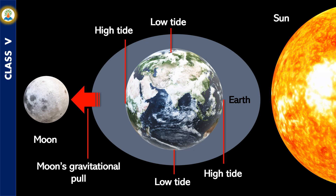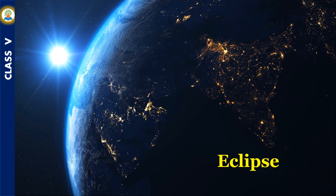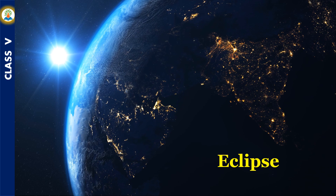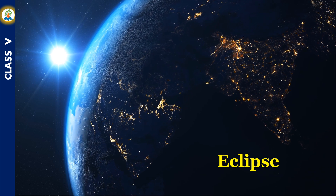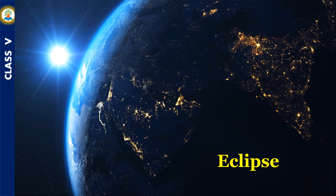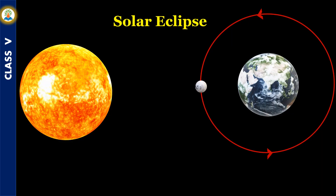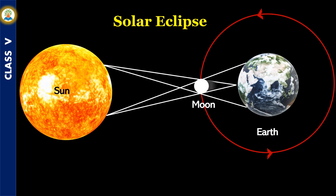The highest tides occur at the time of the New Moon and the Full Moon. An eclipse occurs when an object in space blocks the view of another object such that it cannot be seen partially or completely. A solar eclipse occurs when the Moon comes in between the Sun and the Earth, blocking the sunlight from reaching the Earth and creating a shadow.